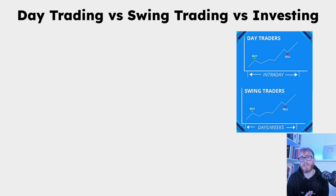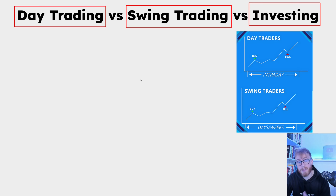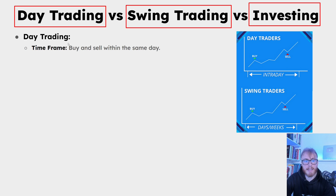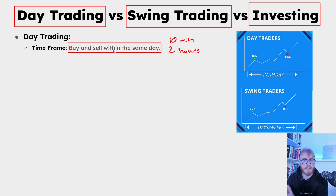Now let's take a look at some different styles of trading stocks — specifically day trading, swing trading, and investing. Day trading is basically when you buy and sell within the same day. A day trader might buy and then sell just 10 minutes later, or maybe two hours later. The important aspect is that you buy and sell within the same day — you don't hold your position overnight.